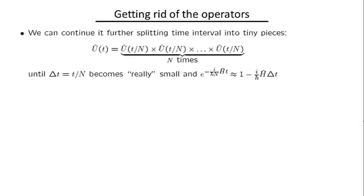To formalize this: instead of splitting the time interval into two pieces, let me split it into N pieces, where N is very large, so that each individual time interval t/N is extremely small. The evolution operator on each small time interval corresponds to the exponential e^(i/ℏ · H · t/N). Since t/N can be made as small as I want, instead of writing the full Taylor series for this exponential, I can approximate it as simply two terms: 1 − (i/ℏ)(H)(t/N), truncating the series at the linear term.